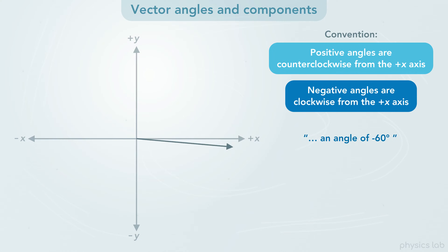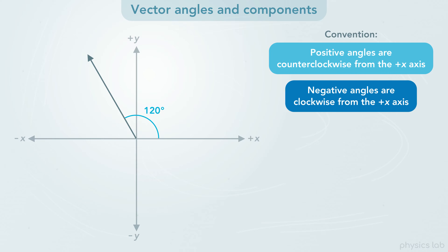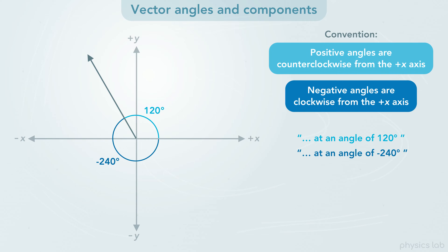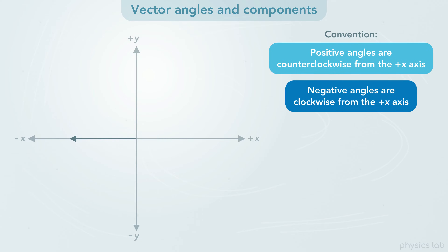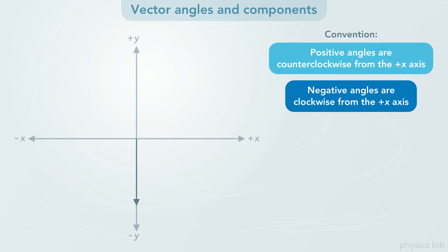Negative 60 degrees would mean the vector rotates clockwise and ends up here. What if the vector points in this direction? Now the vector has an angle of 120 degrees, but we could also describe this direction as negative 240 degrees. There are 360 degrees in a circle, so 360 minus 120 would be 240. The positive y direction is 90 degrees, or negative 270 degrees. The negative x direction is 180 degrees, or negative 180 degrees. The negative y direction is 270 degrees, or negative 90 degrees. And the positive x direction is 0 degrees.